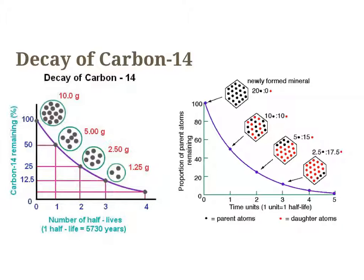These two graphs show the same concept in a different format. The pictogram shows that at 100% parent atoms remaining, there are 20 parent atoms and zero daughter atoms. After one half-life: 10 parent and 10 daughter. After the second half-life: 5 parent and 15 daughter. After the third half-life: 2.5 parent and 17.5 daughter atoms — the same relationship as the previous graph, just represented differently.